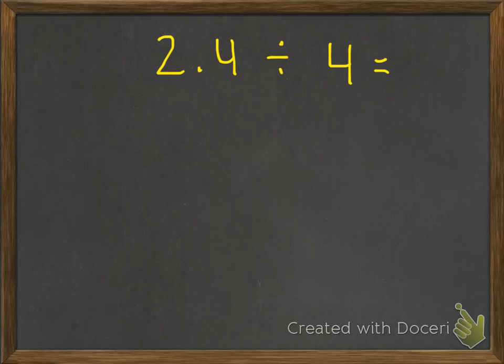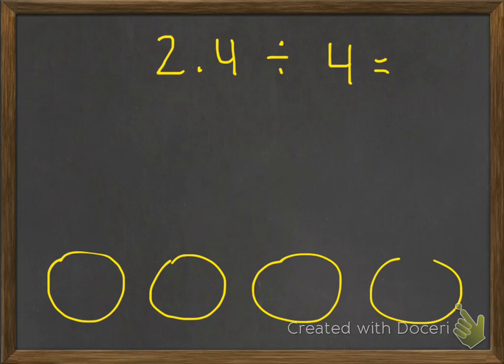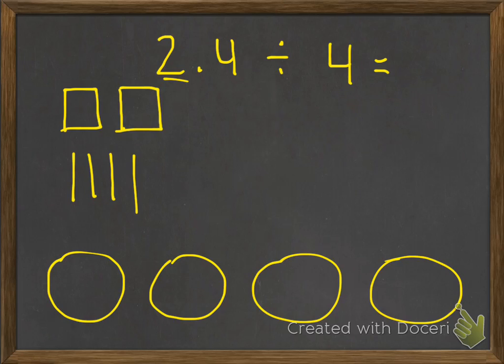Let's take a look at our first example. We have 2 and 4 tenths divided by 4. That means we're going to take two wholes and 4 tenths and share them equally into four groups. We make our four groups, then model our dividend of 2 and 4 tenths — two boxes to represent the two wholes and four straight lines to represent the 4 tenths.